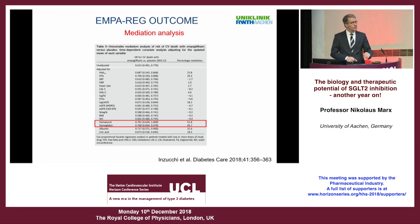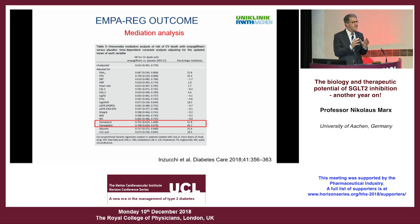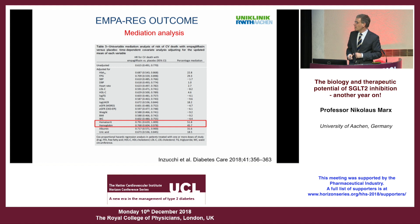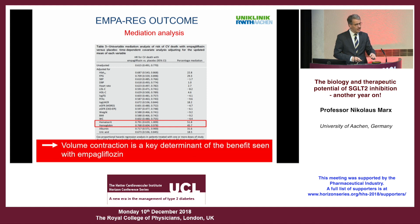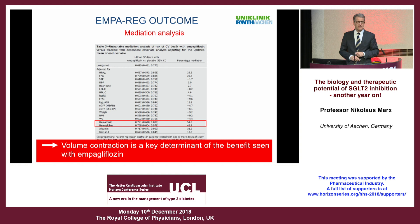Silvio Inzucchi published a very interesting mediation analysis from the EMPA-REG OUTCOME trial. A mediation analysis tries to find out which components that changed in the trial may contribute to a certain outcome. It turned out that a large proportion of the effect seen is due to changes in hematocrit and hemoglobin, suggesting that volume contraction is a key determinant of the beneficial effects seen in this trial.